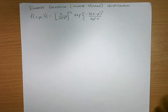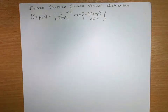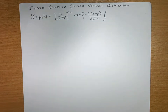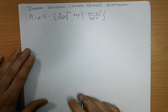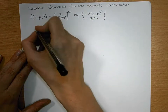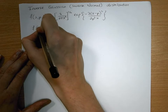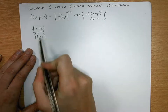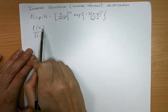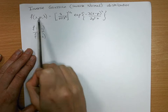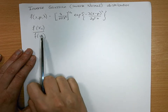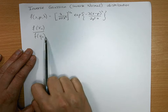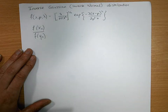In this video we're going to look at finding minimal sufficient statistics — in particular, finding the minimal sufficient statistics for mu and lambda of an inverse Gaussian distribution. Recall that the easiest way to find a minimal sufficient statistic is to find a ratio f(x_n) over f(y_n), where these are both the likelihoods. You have n observations treated as x_i's and n observations as y_i's, and you want this ratio to be constant with respect to your parameters of interest.